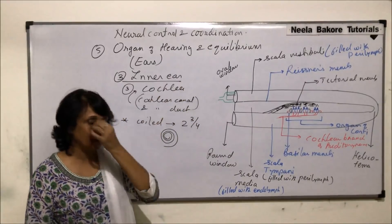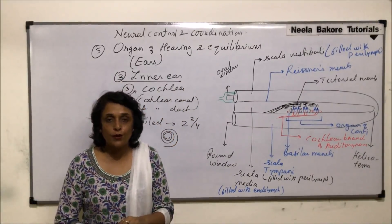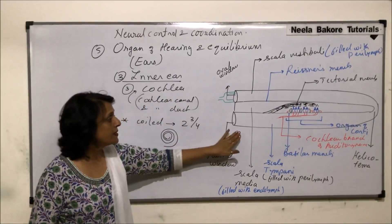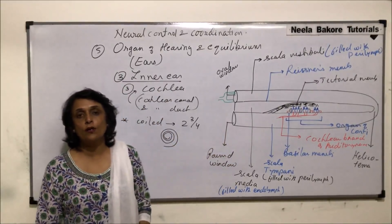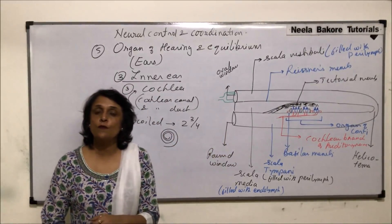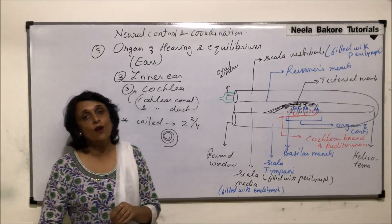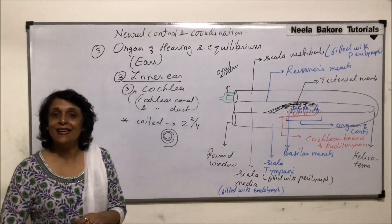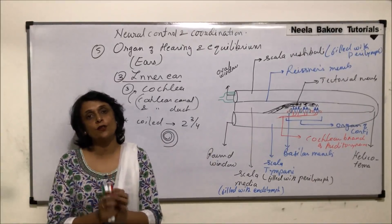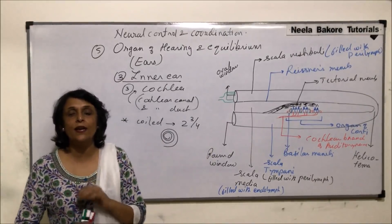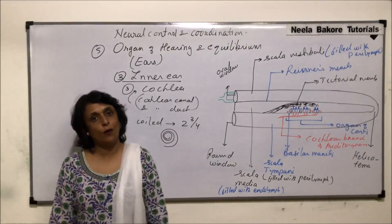So this is our cochlea, which is responsible for hearing. When we talk of the ear as a hearing and equilibrium organ, this is the structure that helps us in hearing. The structures that help us in balancing or equilibrium have already been discussed. In the next part we will combine all these structures and go over the mechanism of hearing one more time.